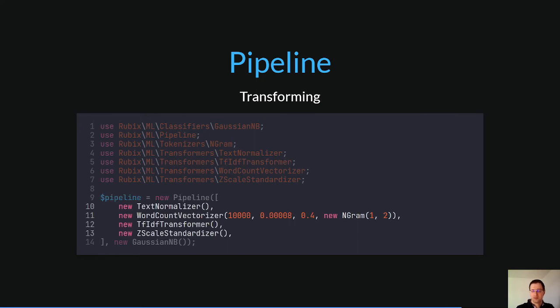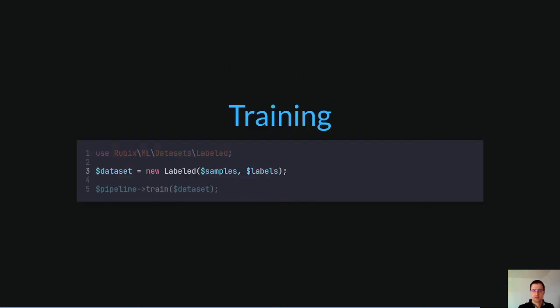The Gaussian NB class is a version of Naive Bayes classifier. It places a probability density function over the input features. The next step is to create a labeled object by passing the generated samples and labels array into the constructor.